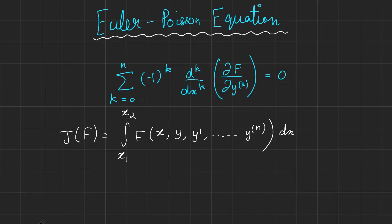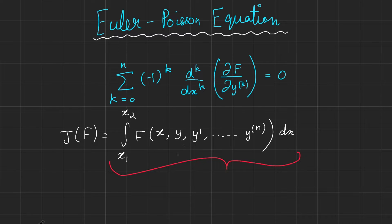Today we are going to be deriving the Euler-Poisson equations. These are a generalization of the Euler-Lagrange equations, and what they do is optimize a functional of this form: the integral from x₁ to x₂ of a function of x, y, y′, and all the way up to the nth derivative of y. For the Euler-Lagrange equations, the functional stops at y′. This is the generalization, and the idea used is somewhat similar.